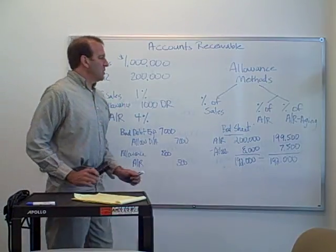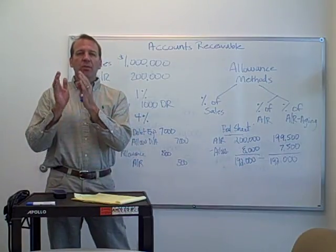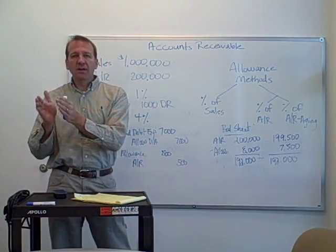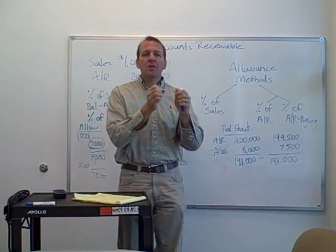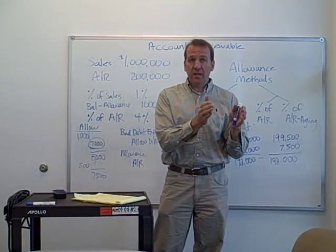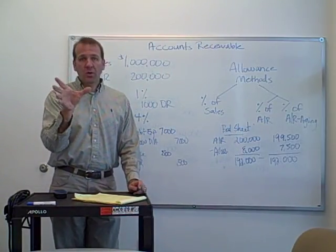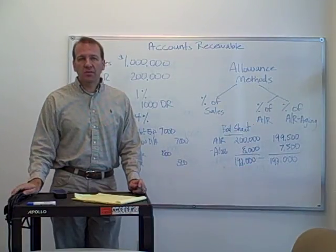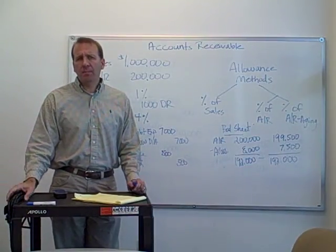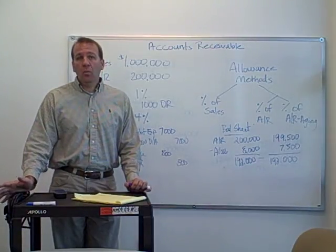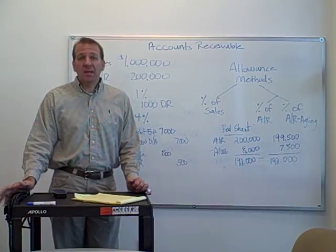What's the percentage of accounts receivable aging? An aging takes your accounts receivable and divides it into categories: those that are current, 1 to 30 days late, 31 to 60 days late, 61 to 90 days late. The percentage for current accounts is probably pretty low because most of those people will pay us, but the percentage gets higher as accounts get later.